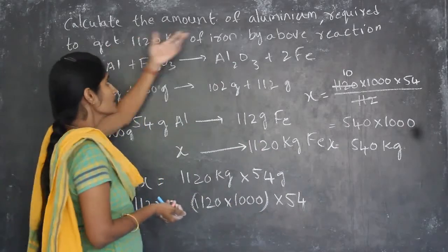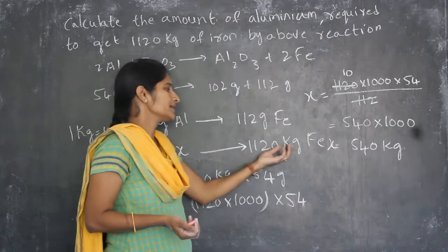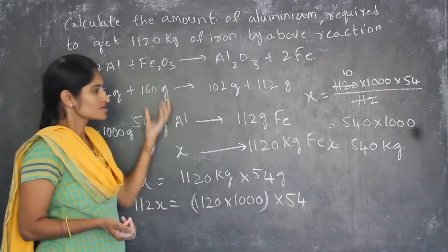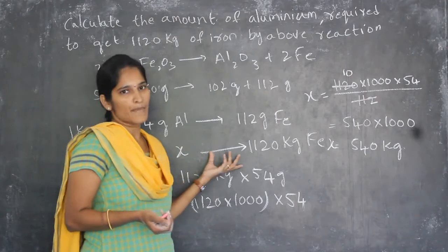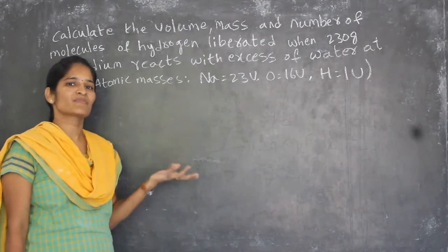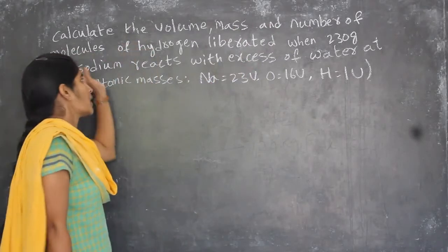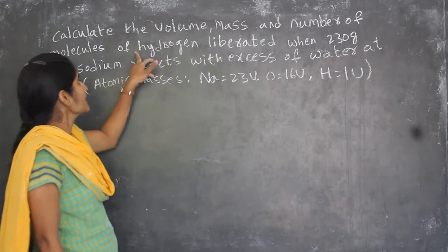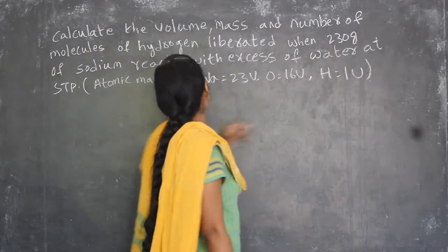So 540 kg is the amount of aluminium needed to get 1120 kg of iron. This is how we solve problems given on equations — this is a mass-mass relationship, where mass is given and mass is asked. Now we will see another problem: calculate the volume, mass, and number of molecules of hydrogen — that is a mass-volume-number of molecules relationship.